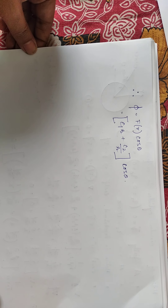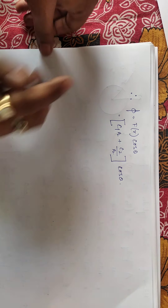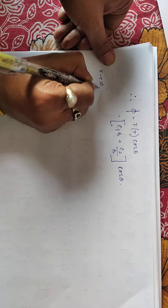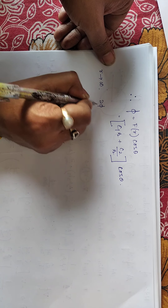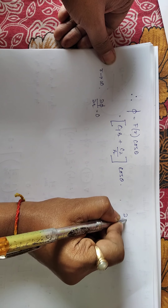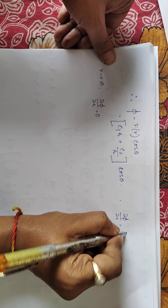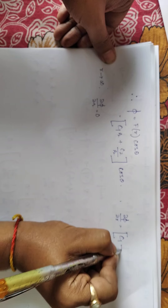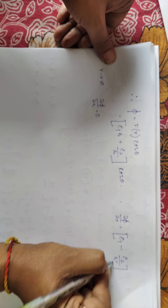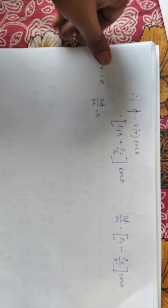Therefore phi = (C1·r + C2/r)·cos theta. Applying the first boundary condition — as r → ∞, del phi/del r = 0: del phi/del r = (C1 - C2/r²)·cos theta. As r → ∞ this gives C1 = 0. Applying the second boundary condition at r = a: -del phi/del r = U cos theta gives -(-C2/a²)·cos theta = U cos theta, so C2 = U·a².